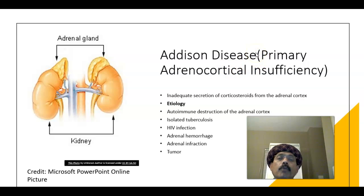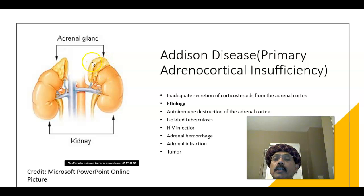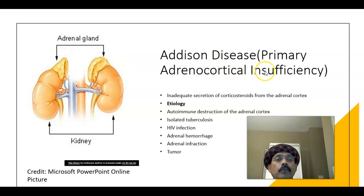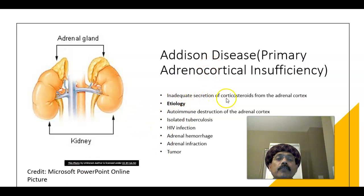This is a problem of the adrenal cortex. The adrenal cortex is a part of the adrenal gland, also called the suprarenal gland, that is located above the kidney. The cortical part will have insufficiency — insufficient synthesis and formation of adrenocortical hormones — and that is the cause of Addison's disease. The adrenal cortex needs to secrete corticosteroids.